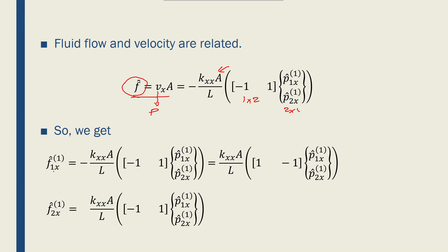Now fluid flow rate at node 1 is equal to this value. We have minus over there, we have minus 1, we have 1, and then this is p1x and p2x. If we bring this negative sign inside the matrix, we'll have kxx times A over L, 1 minus 1, and then we'll have the 2 by 1 nodal potential vector.